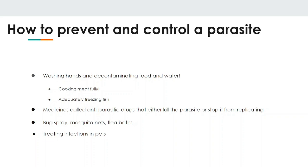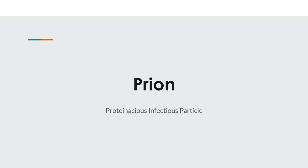How to prevent and control parasites: wash hands, decontaminate food and water. Antiparasitic drugs that either kill the parasite or stop it from replicating are available. Bug sprays, draining mosquito nests, and flea baths help prevent transmission. And especially treating infections in pets is key — pets are magnets for these.